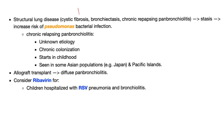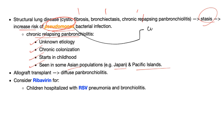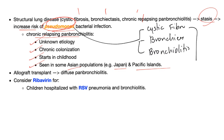Structural lung diseases such as cystic fibrosis, bronchiectasis, or chronic relapsing panbronchiolitis can lead to stasis — bacteria will love you, especially pseudomonas. Chronic relapsing panbronchiolitis has unknown etiology, involves chronic colonization especially with pseudomonas, starts in childhood, and is seen in some Asian populations such as Japan and the Pacific Islands. Pseudomonas is related to cystic fibrosis, bronchiectasis, and bronchiolitis. Allograft transplant can lead to diffuse panbronchiolitis in some patients.